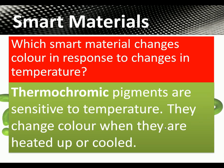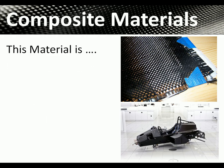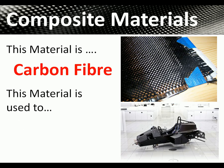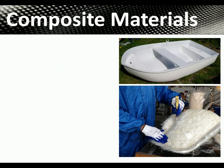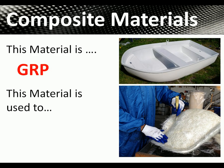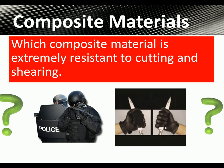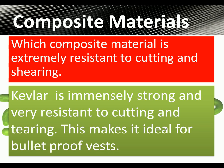Which smart material changes in response to changes in temperature? It is thermochromic pigments — they are sensitive to temperature and change color when heated up or cooled. For composite materials: carbon fiber is used to make F1 racing cars. GRP is used to make boat hulls. Kevlar is extremely resistant to cutting and shearing and is used for bulletproof vests.